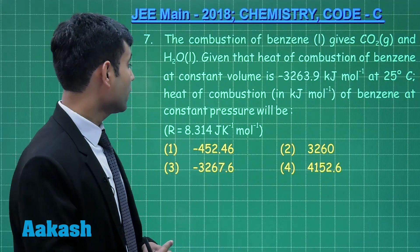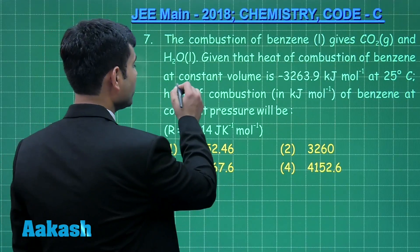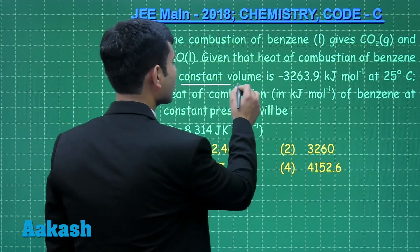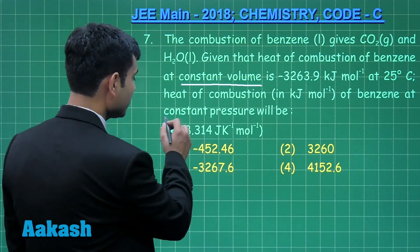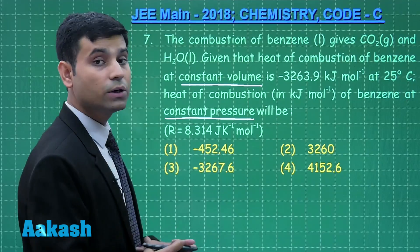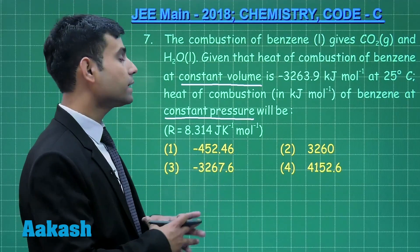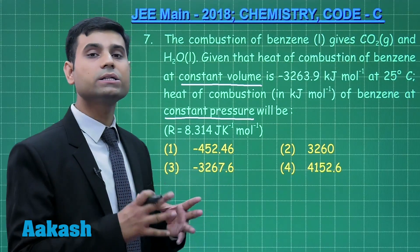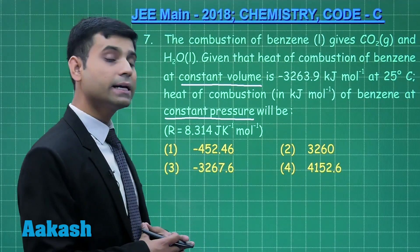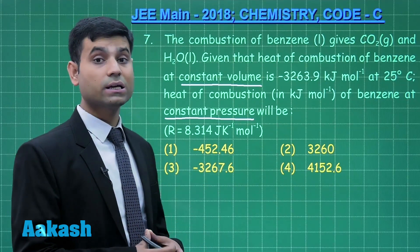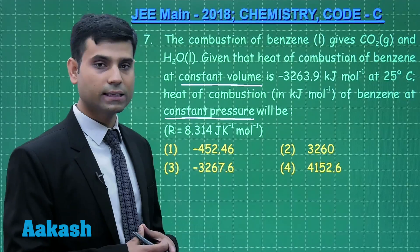Now here in this question, this is important point. We are given with heat at constant volume and we have to find heat at constant pressure. Students, we know the heat exchange at constant volume is internal energy change that is delta U and heat exchange at constant pressure is enthalpy change that is delta H.